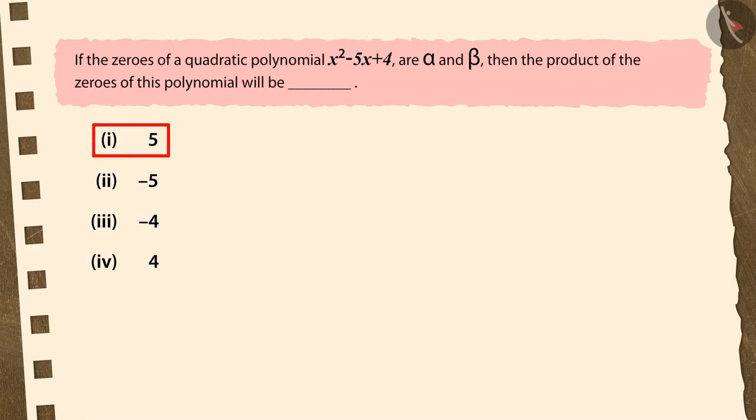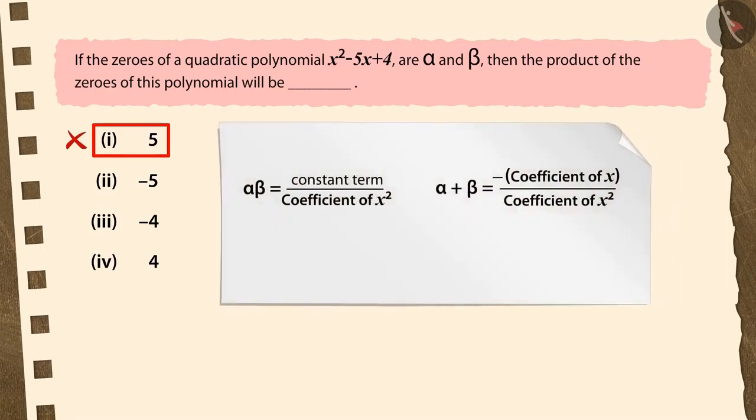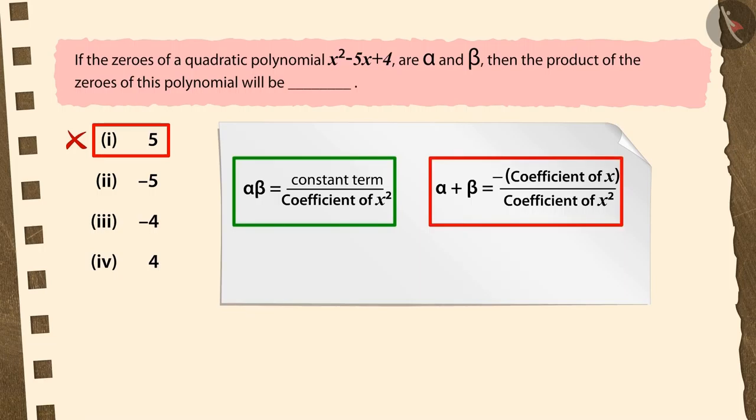If you have selected the first option, then you have chosen the wrong answer. Your answer is incorrect because you used incorrect formula. You did not use the formula for the product of zeros here. You have used the formulas for their sum.